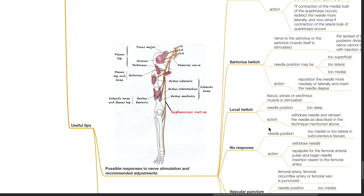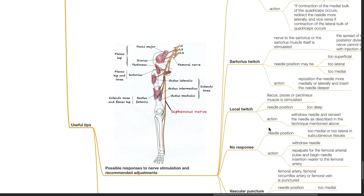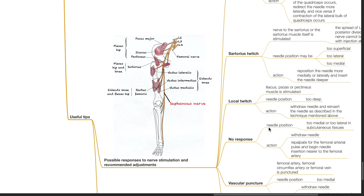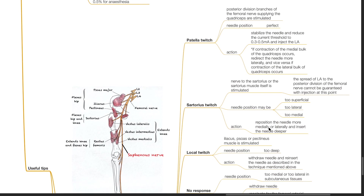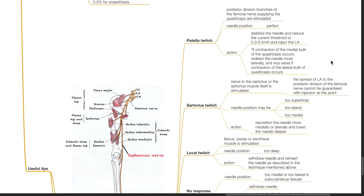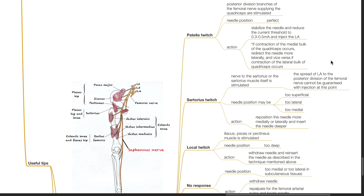Useful tips — possible responses to nerve stimulation and recommended adjustments. Patella twitch: the posterior division branches of the femoral nerve supplying the quadriceps are stimulated. Needle position is perfect. Action: stabilize the needle and reduce the current threshold to 0.3 to 0.5 mA and inject the LA. If contraction of the medial bulk of the quadriceps occurs, redirect the needle more laterally, and vice versa if contraction of the lateral bulk occurs.